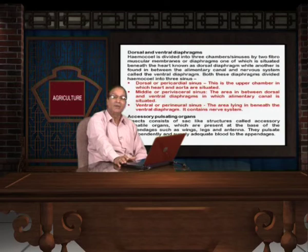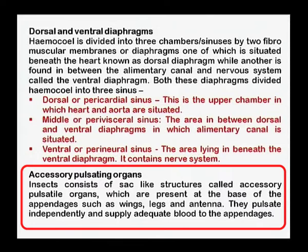Besides the dorsal vessel, which is the main pulsatory organ, accessory organs are also present that help to some extent with blood circulation. These structures are mainly present near the junctions where appendages are attached — for example, wings and legs are important appendages of the insect body.